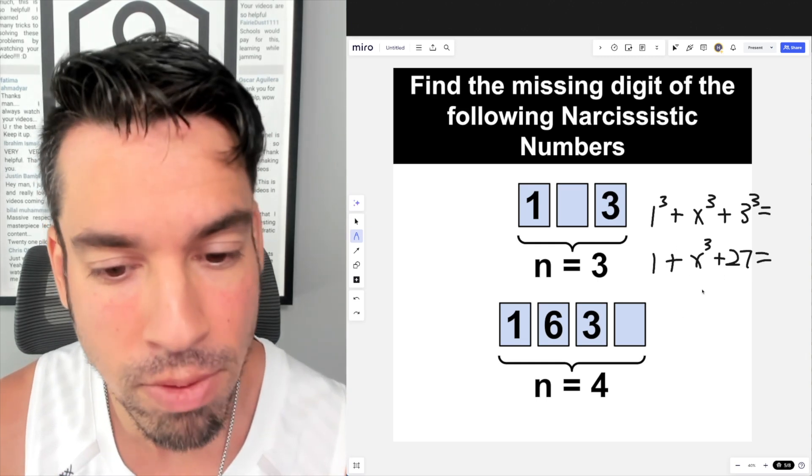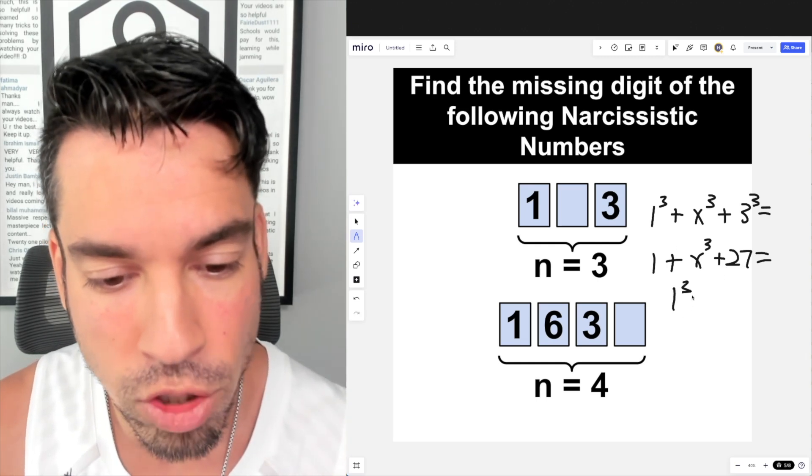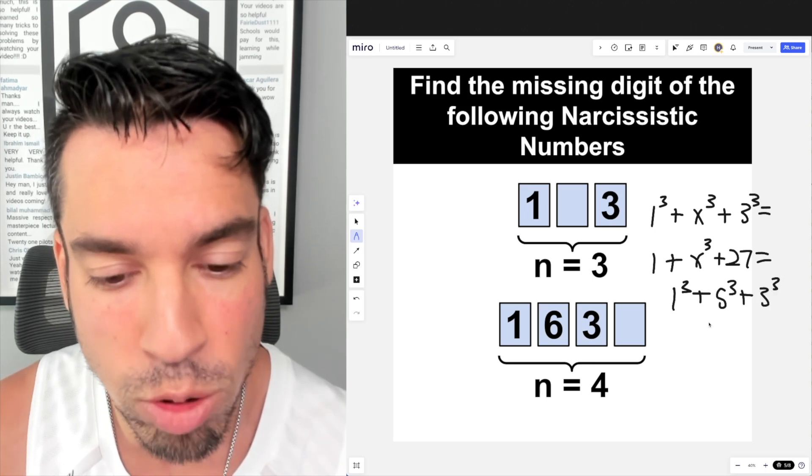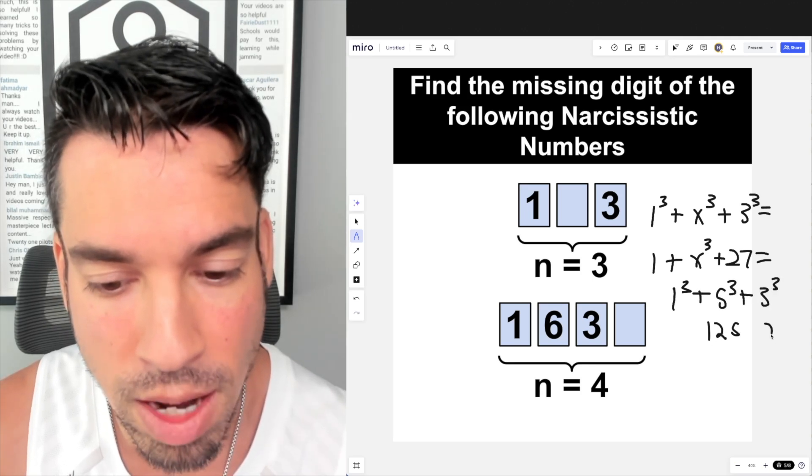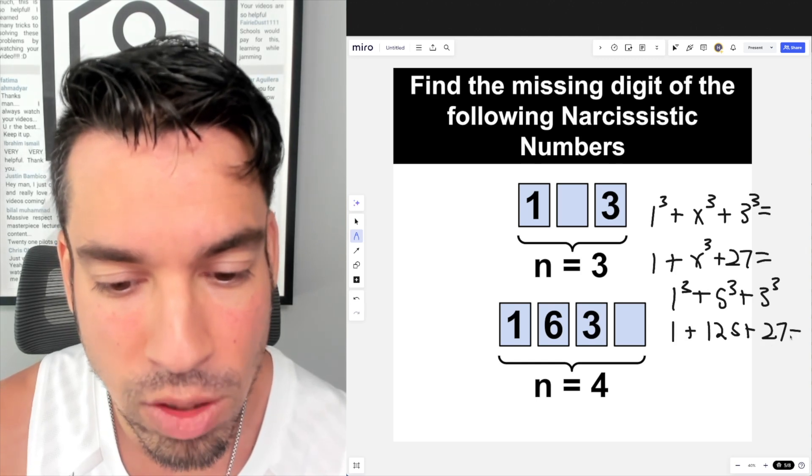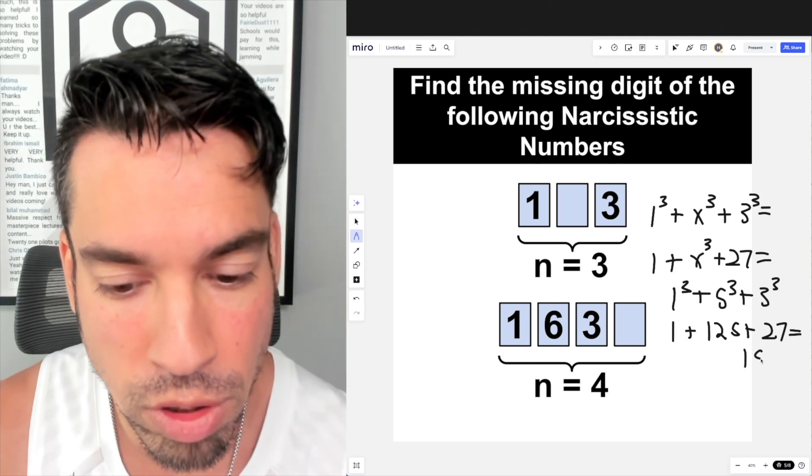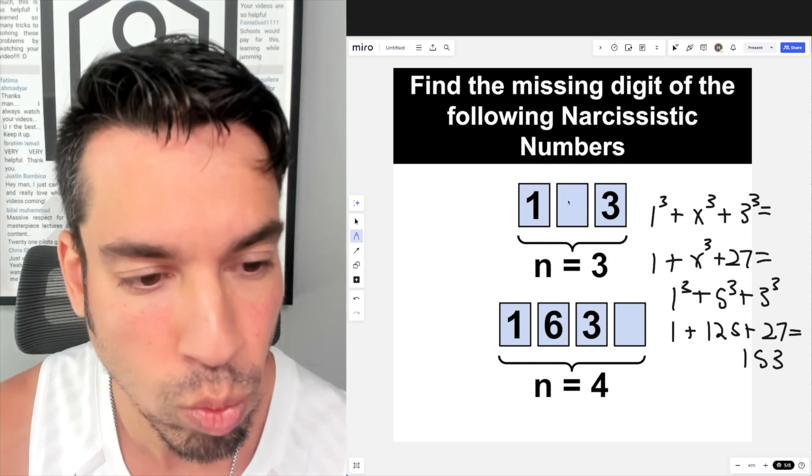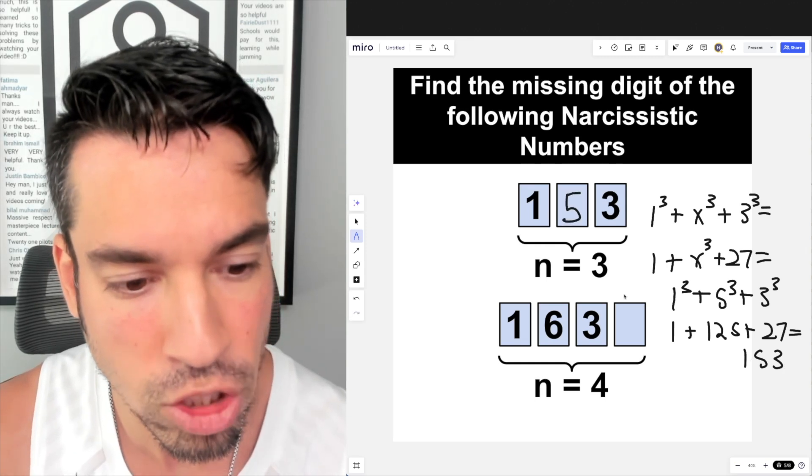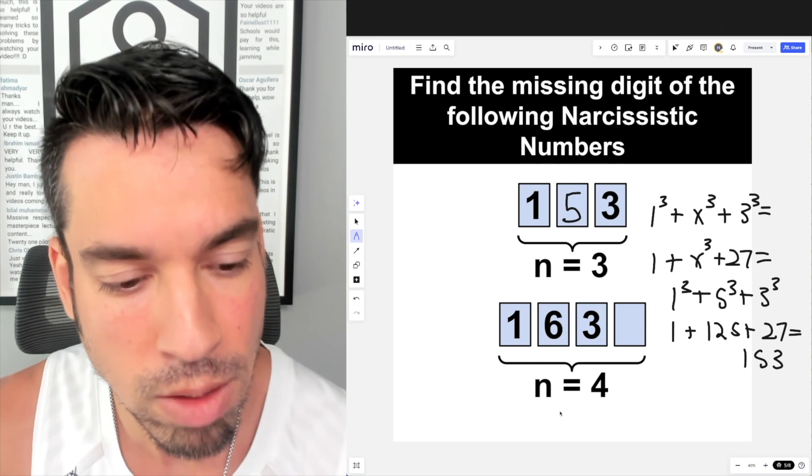But what about 5? 1³ + 5³ + 3³. Well, 5³ is actually 125, and then we add it to the 27 and the 1, and guess what we get? 153, which would be the number itself. So therefore, the missing digit is 5.